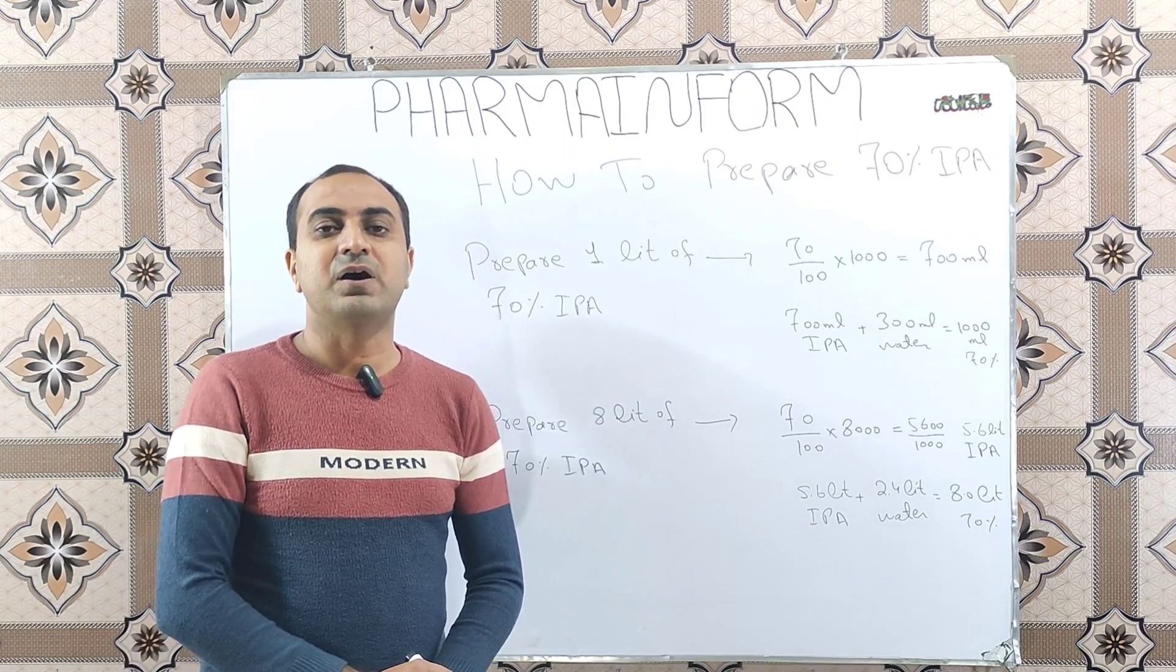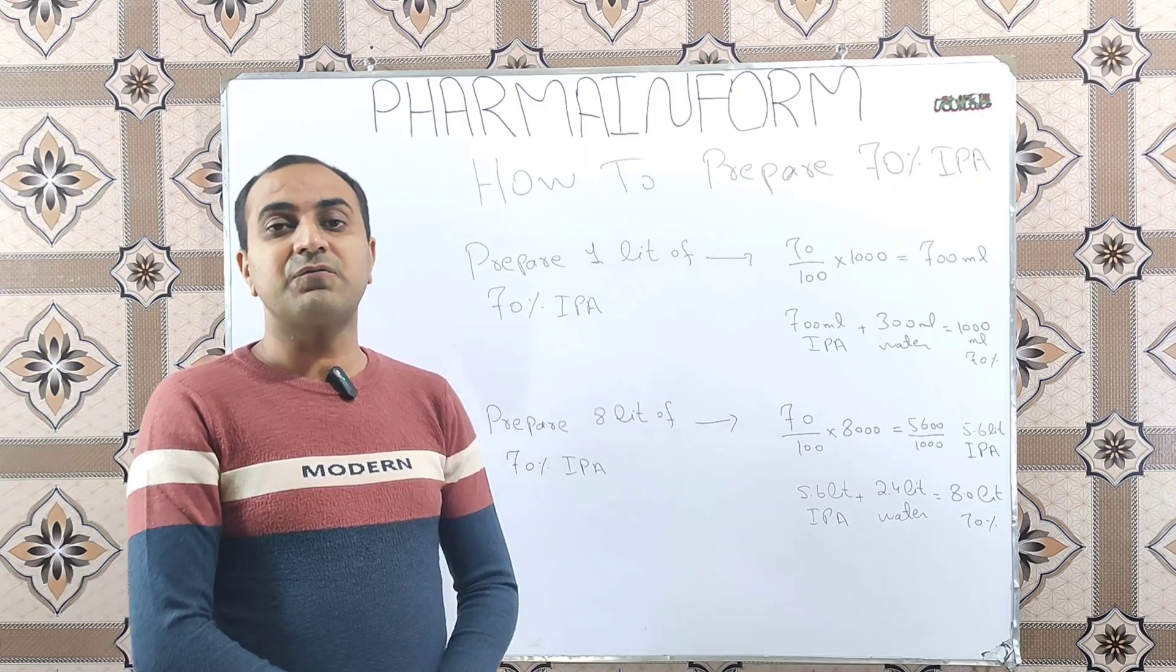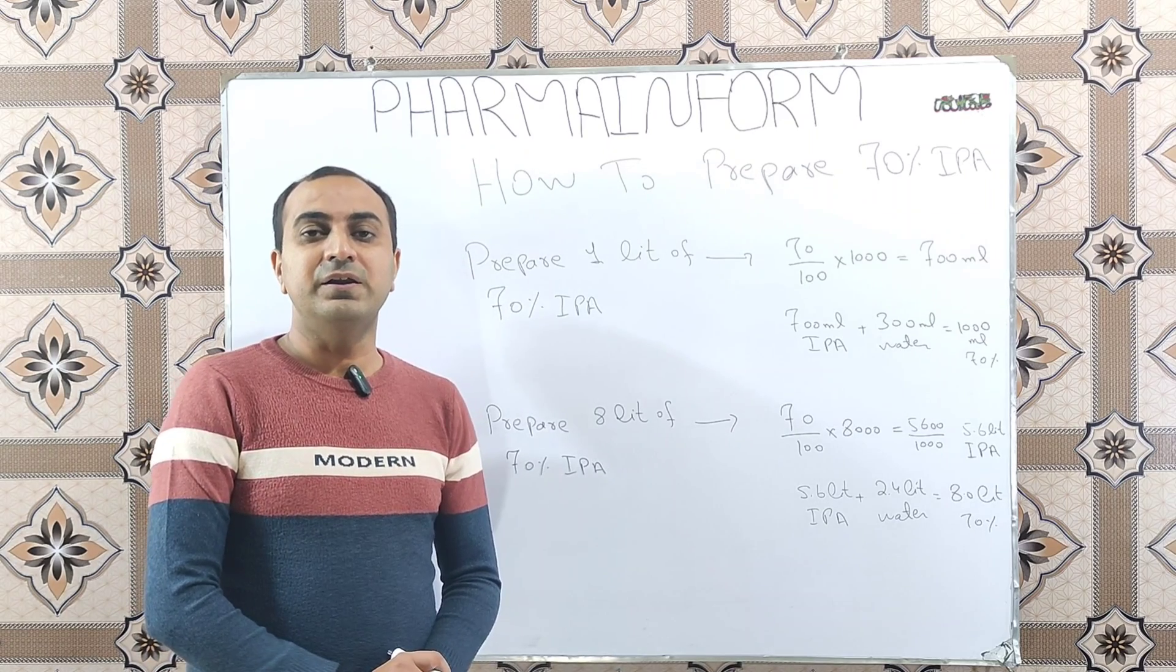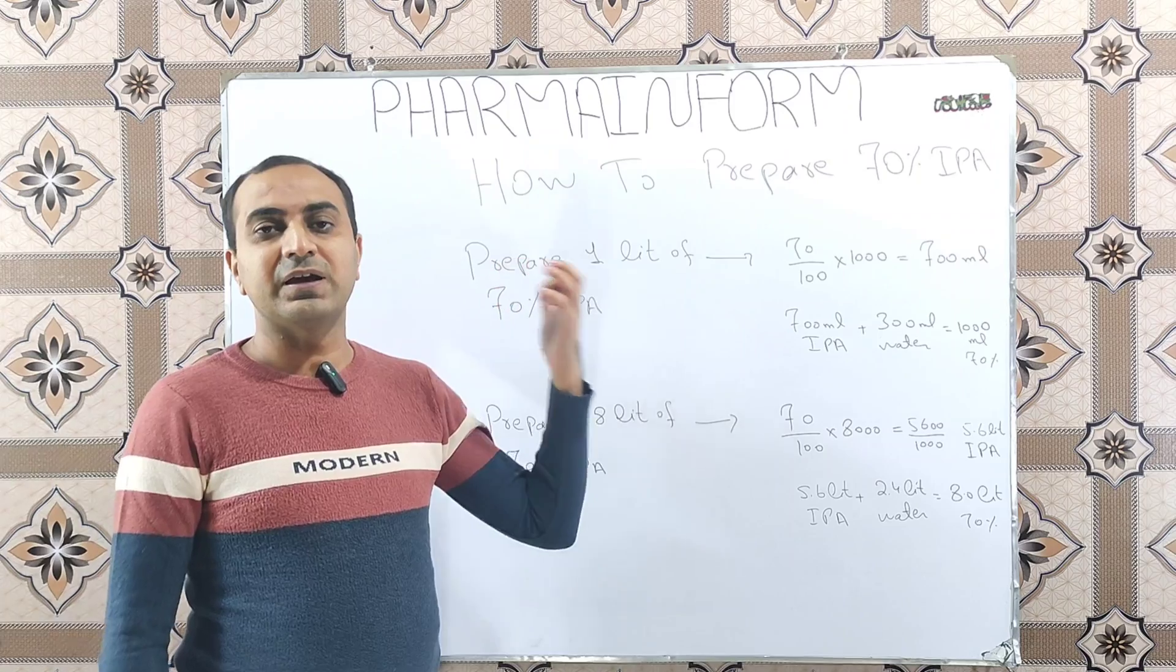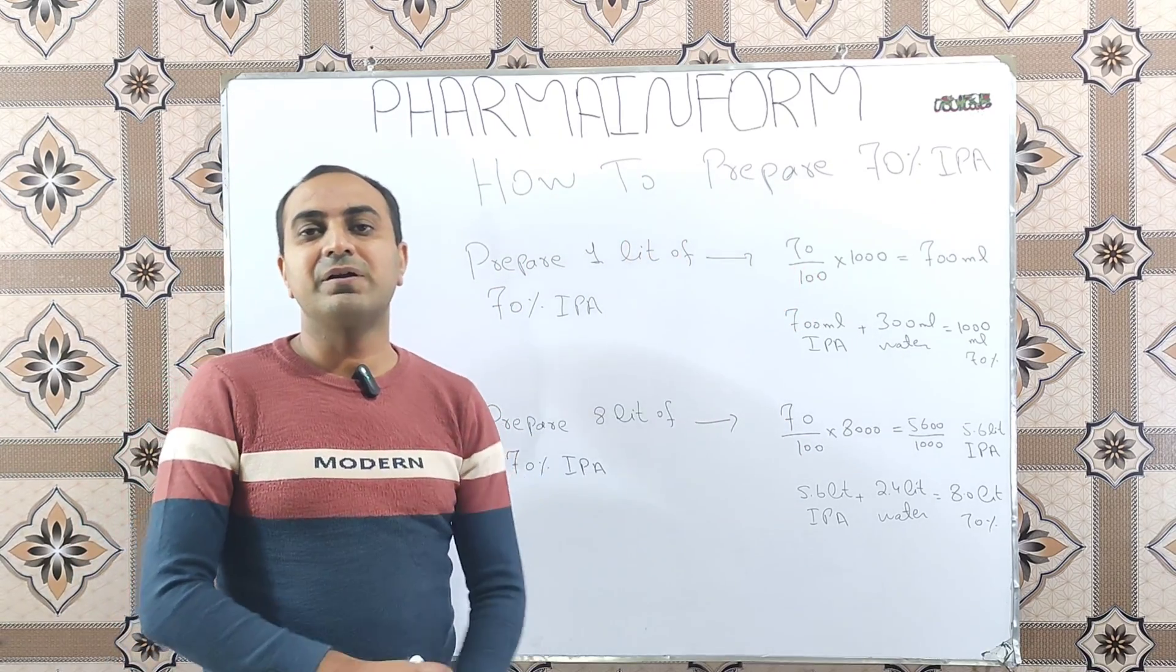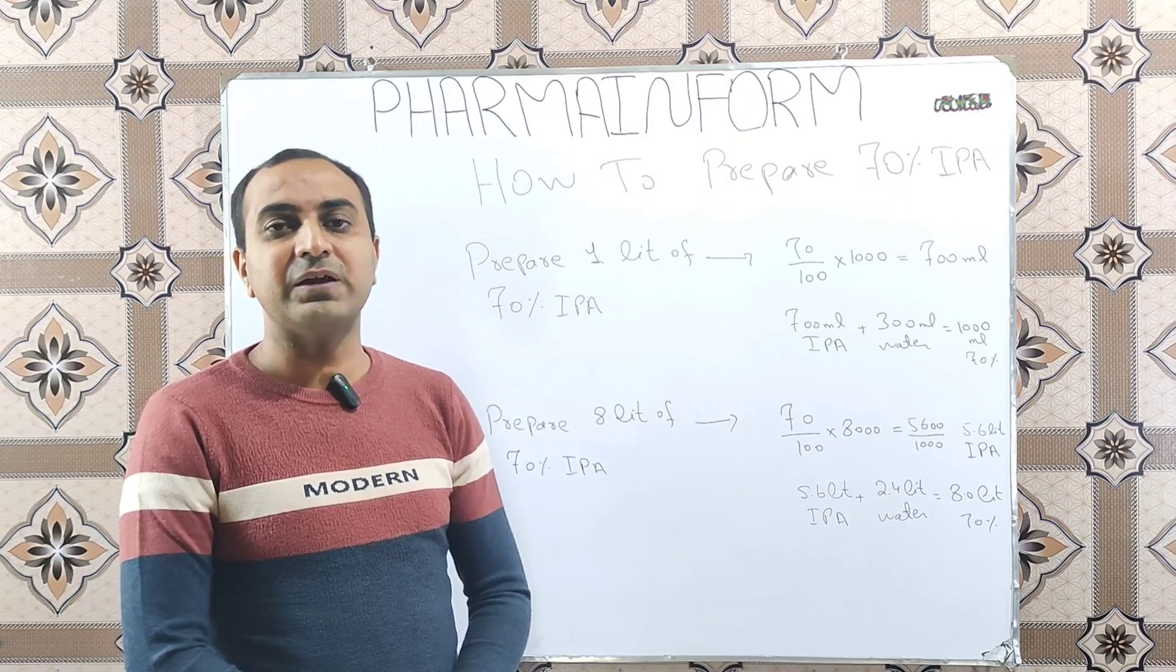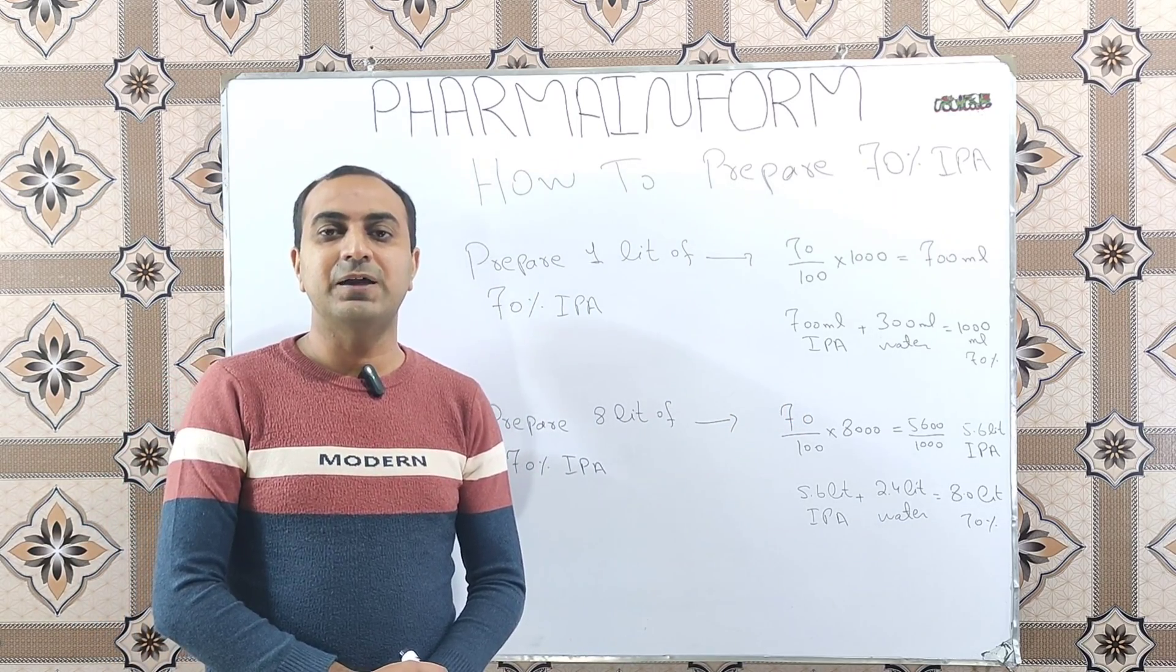Here we will learn how to prepare 70% IPA solution. Many of us working in pharmaceutical industries, pharmacy or in any other field can easily prepare 1 liter of the 70% isopropyl alcohol because we have remembered that for 1 liter we will use 700 ml of IPA and 300 ml of water. But the confusion is created when we want to prepare different volumes of the 70% IPA.